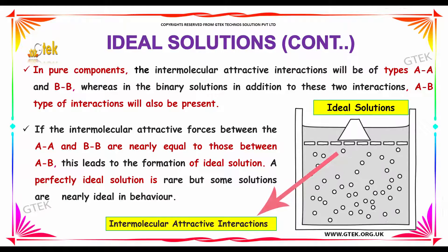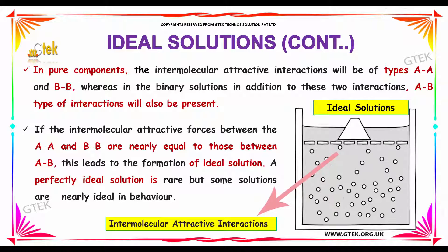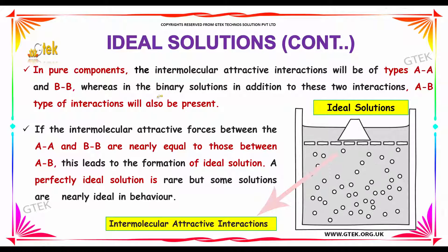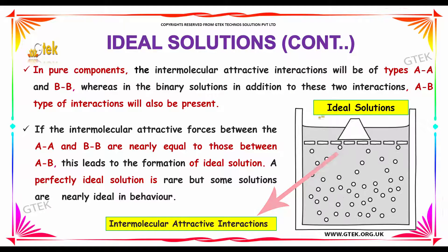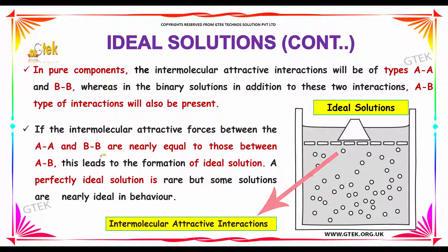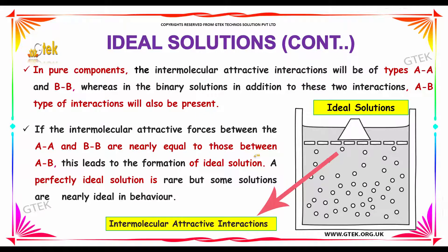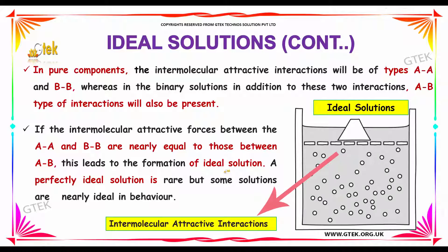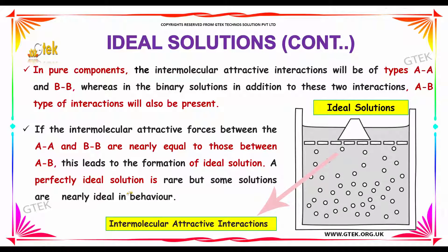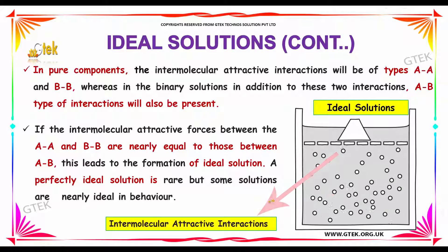In pure components, the intermolecular attractive interactions are of type A-A and B-B, whereas in the binary solution, A-B type interactions are also present. If the molecular attractive forces between A-A and B-B are nearly equal to those between A-B, this leads to the formation of an ideal solution. A perfectly ideal solution is rare, but some solutions are nearly ideal in behavior.